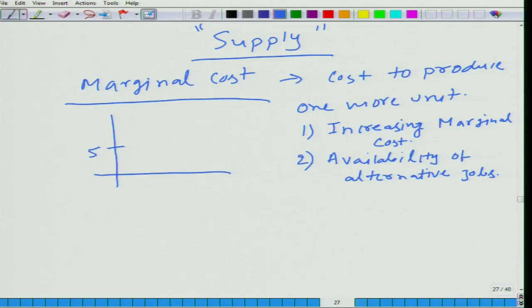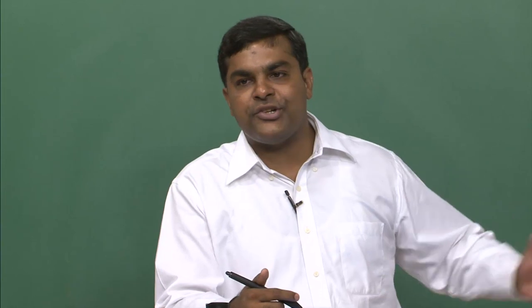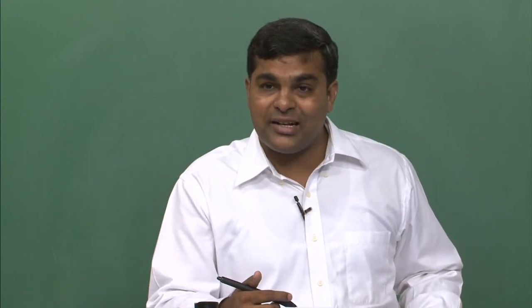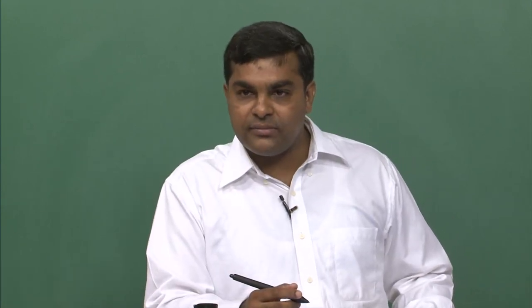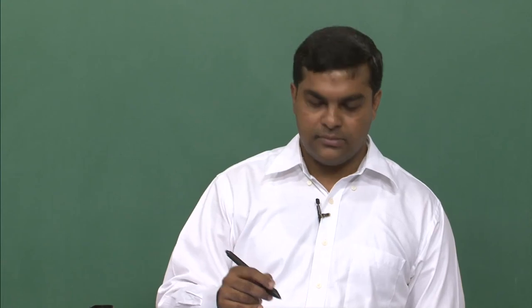Another way to look at it: if market price was 5 rupees and you were not willing to supply any mango because you are not efficient at climbing trees, you would typically catch fish and sell it. But if the price of mango starts climbing up, you would realize it is beneficial to sell mangoes rather than catching fish. So because of increasing marginal cost and availability of alternative jobs, supply curve is an upward sloping curve.